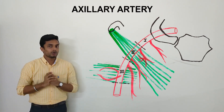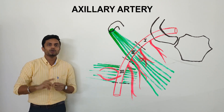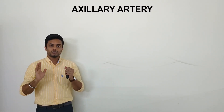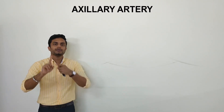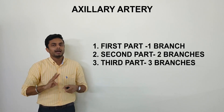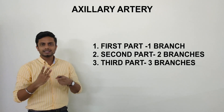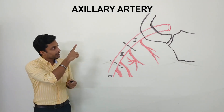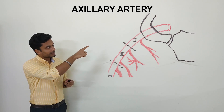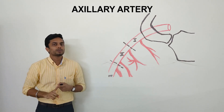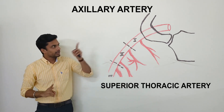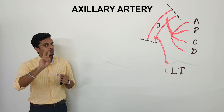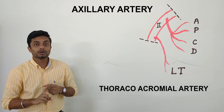Now the branches of the axillary artery — it is very easy to remember. The number of branches arising from each part follows a simple rule: the first part gives off one branch, the second part gives off two branches, and the third part gives off three branches. The first part gives off the superior thoracic artery, which supplies the superior aspect of the thoracic region. From the second part, you can see two branches arising — the first is the large thoracoacromial trunk.